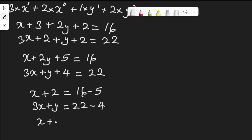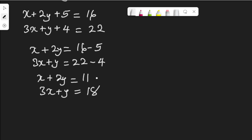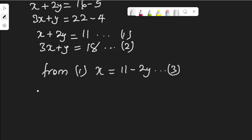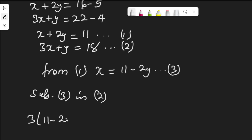So x plus 2y equals 11 — let's call this equation 1. And 3x plus y equals 18 — let's call this equation 2. From equation 1, x is equal to 11 minus 2y — let's call that equation 3. I'm using the substitution method to solve the simultaneous equation. Substituting equation 3 into equation 2, equation 2 becomes: 3 multiplied by (11 minus 2y) plus y equals 18.